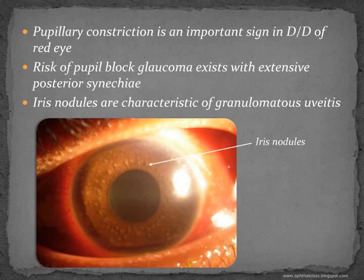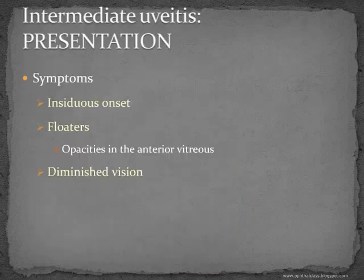Iris nodules are characteristic of granulomatous uveitis. There are plenty of nodules on the iris. This was a patient with granulomatous uveitis, the cause of which was an infection.